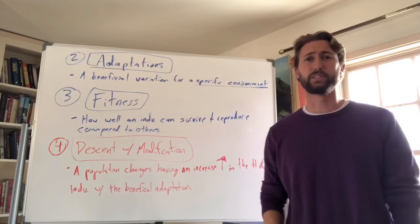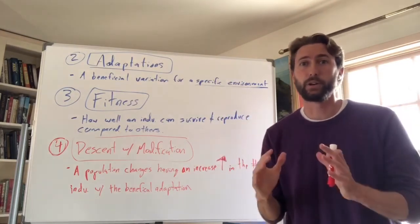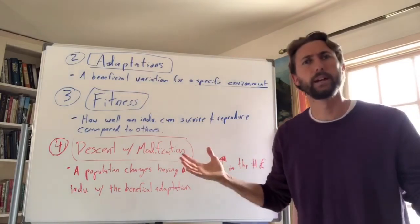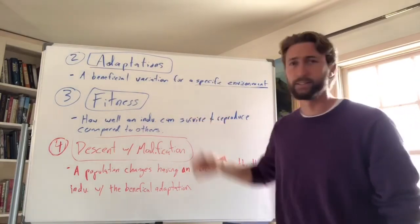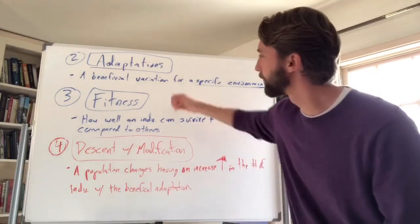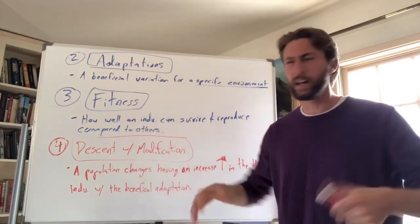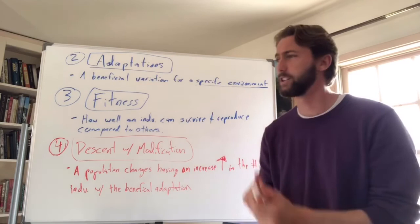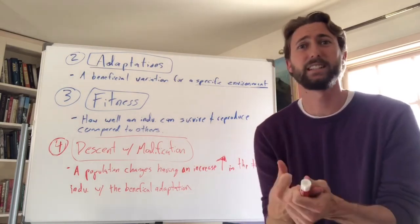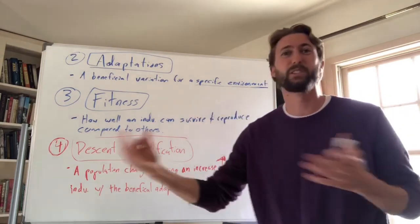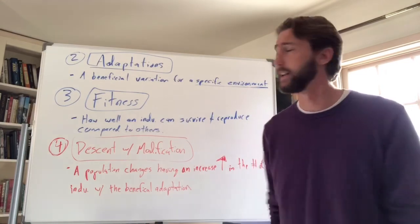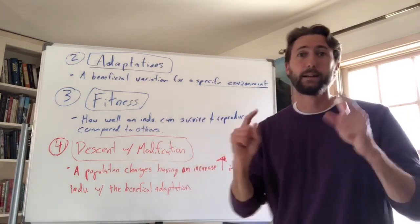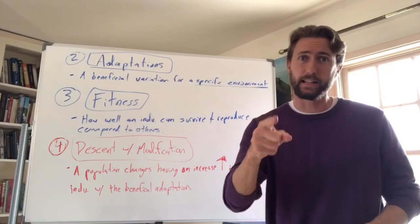That's evolution by natural selection in a crash course — but how do we know it's right? Next we're going to talk about the evidence. We'll look at the fossil record, biogeography, molecular biology, and DNA sequence similarities and differences between species. Hopefully this was helpful, guys. Talk to you next time — keep it up.